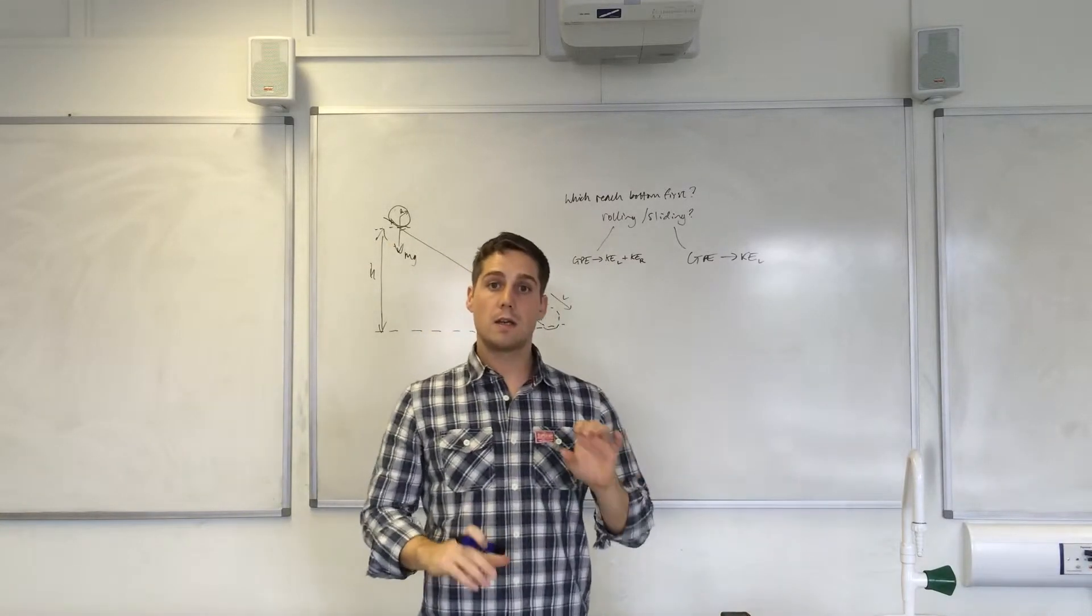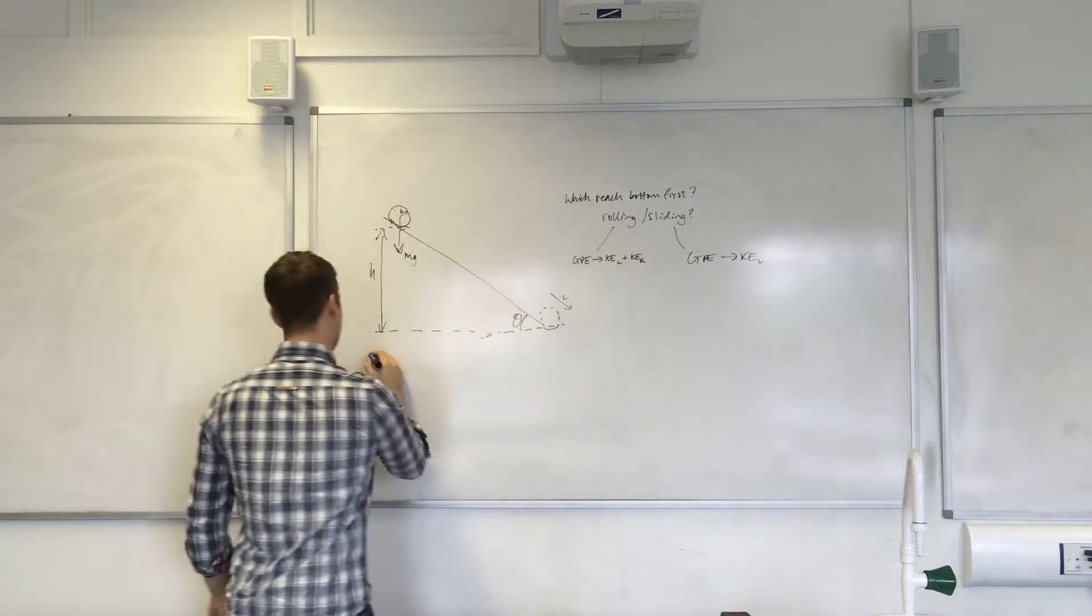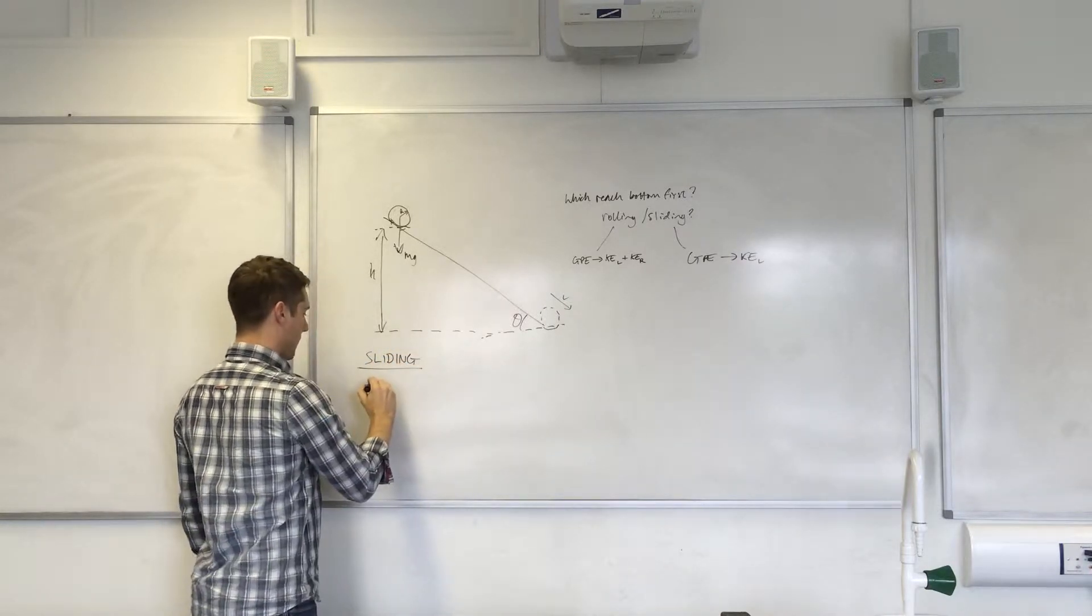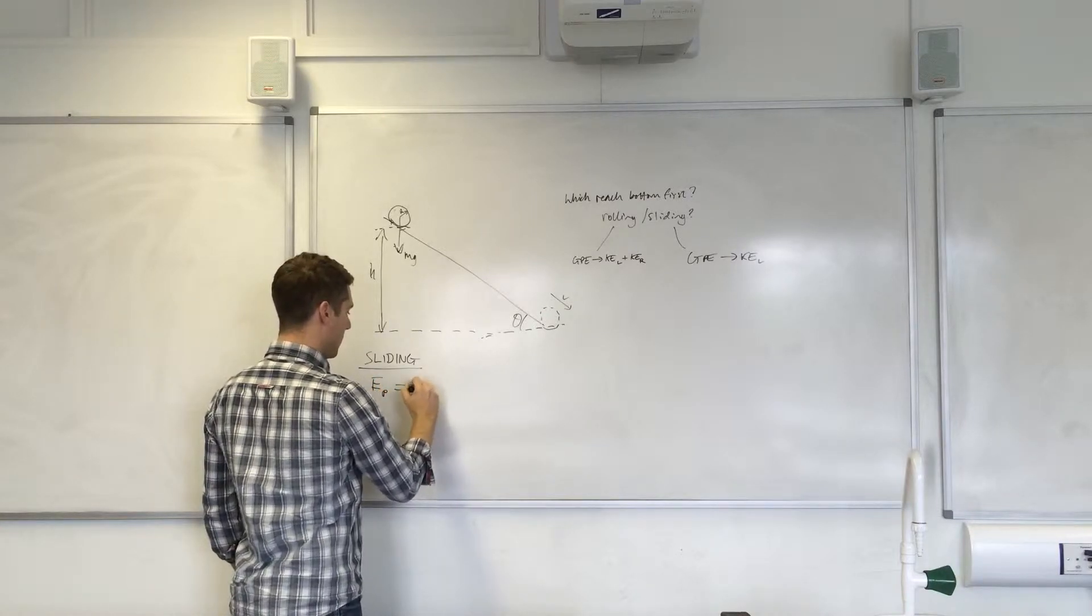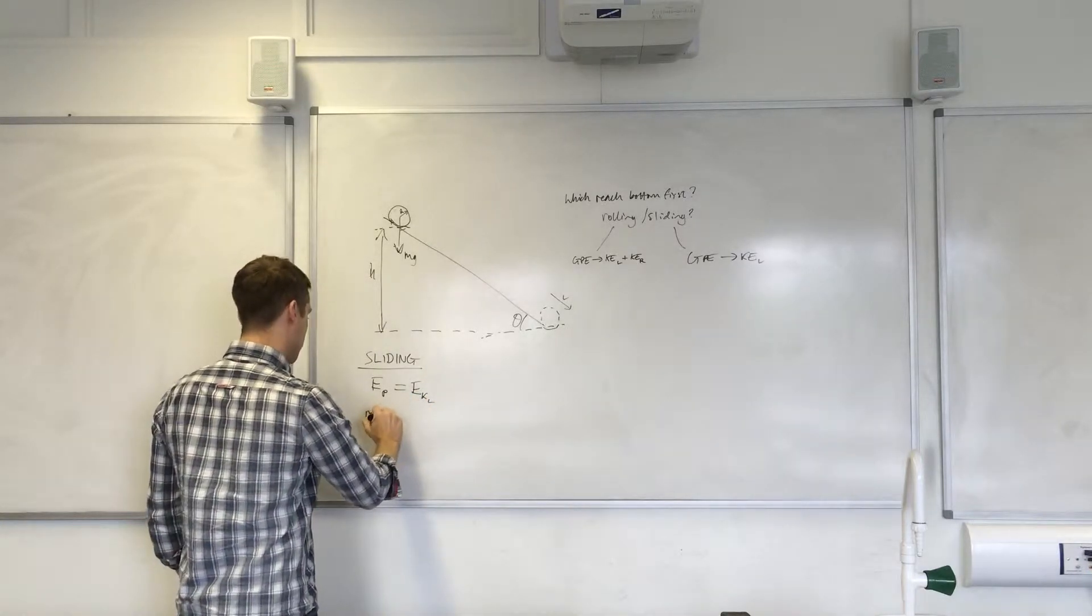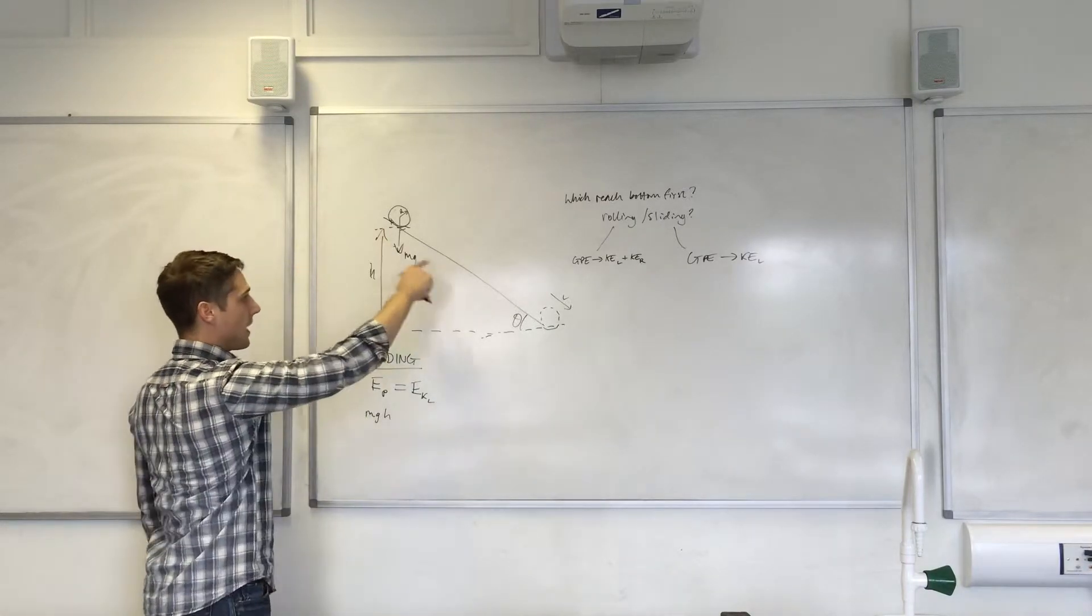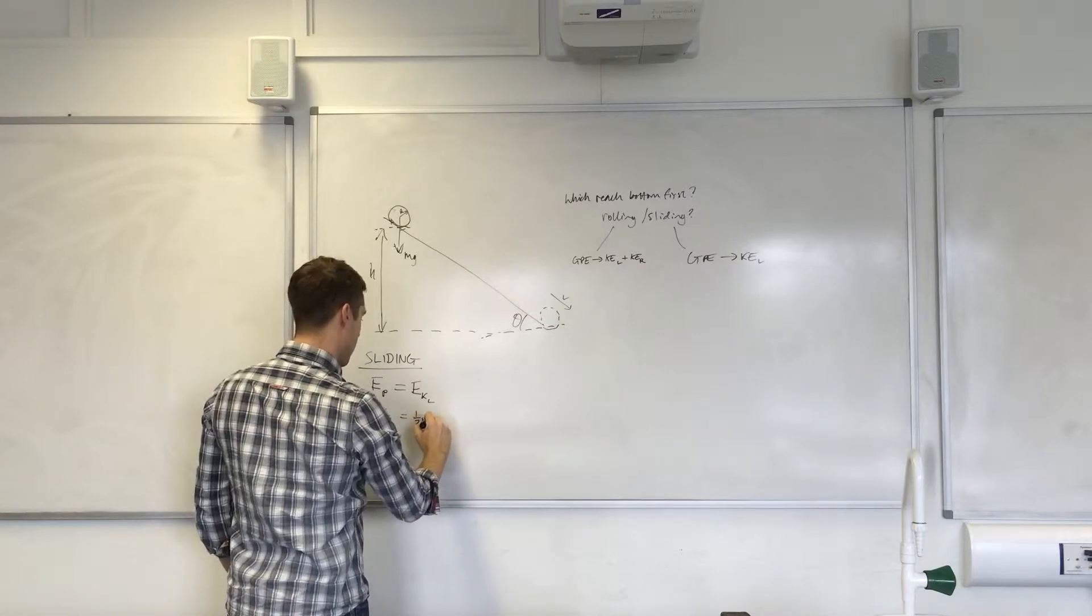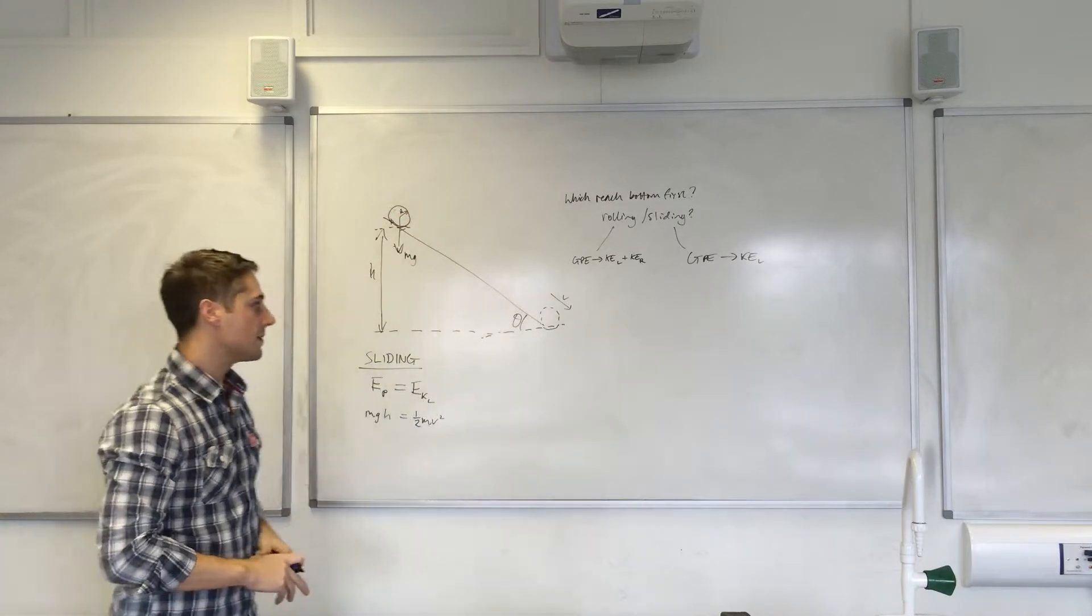Firstly, if the cylinder were to slide, so the potential energy is equal to the final kinetic energy, which is linear: mgh. The object has got a mass m, h above our reference point here, so we call that half mv squared, v being the linear velocity that the object has at the bottom.